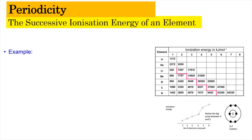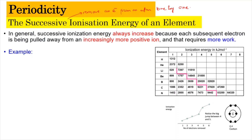Successive ionization energy means that we're going to remove an electron from an atom one by one until all the electrons in the atom are removed. In general, the successive ionization energy will always increase because each subsequent electron being removed from an increasingly more positive ion will require extra work.